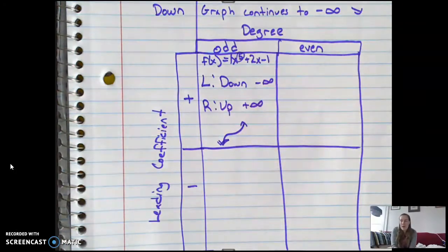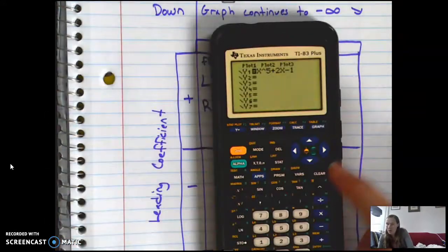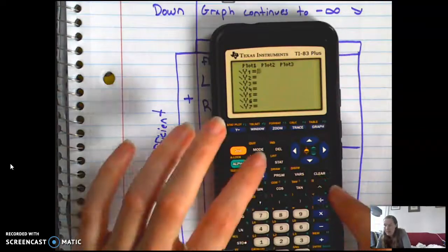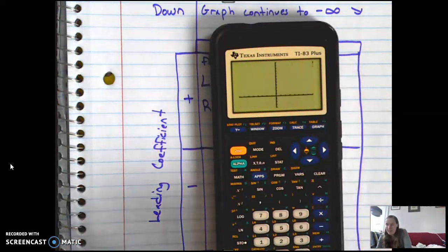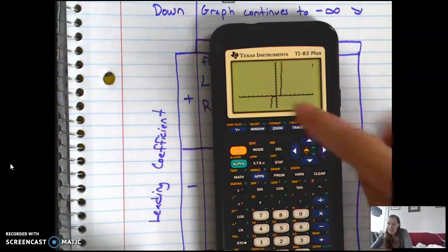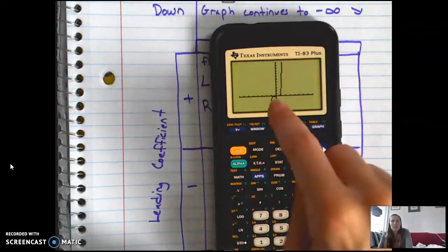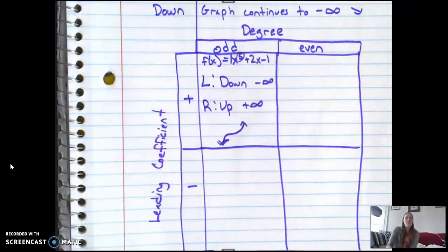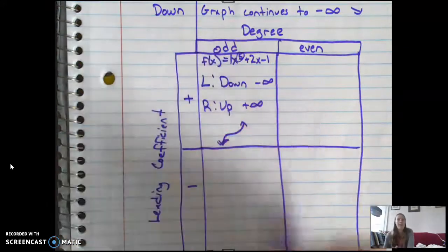So this is true for anything where the degree is odd and the leading coefficient is positive. So let's say I had x to the ninth, and I graphed that. Same thing. It goes down and it goes up. It just looks a little bit different in the middle. So without the ability to graph, I can figure this out just by knowing this part of the table.